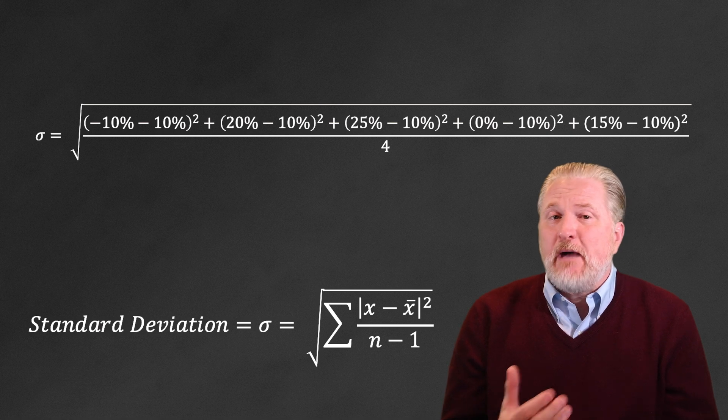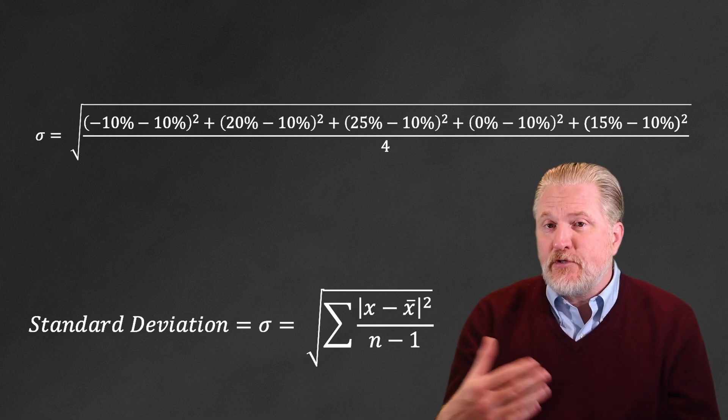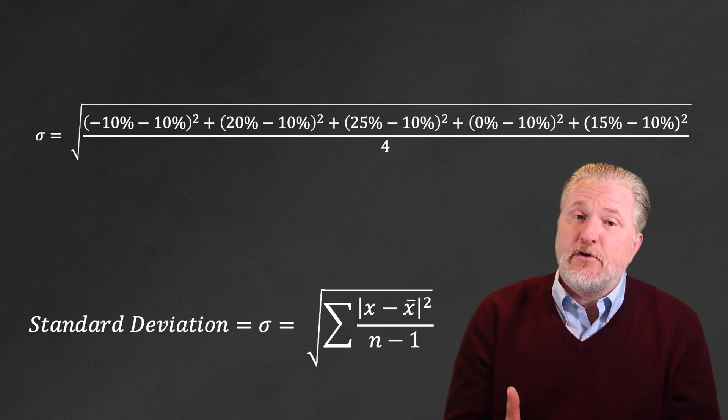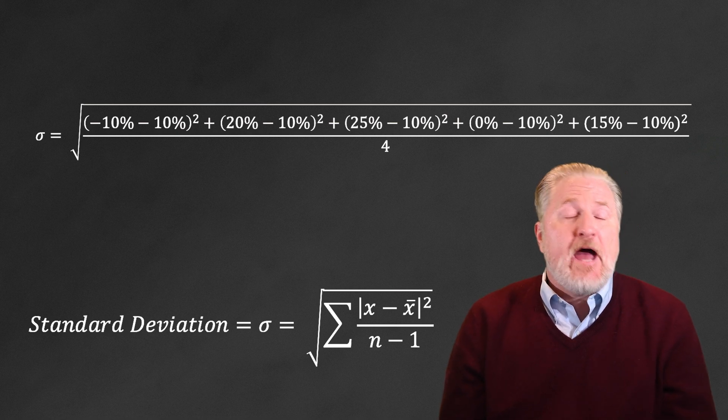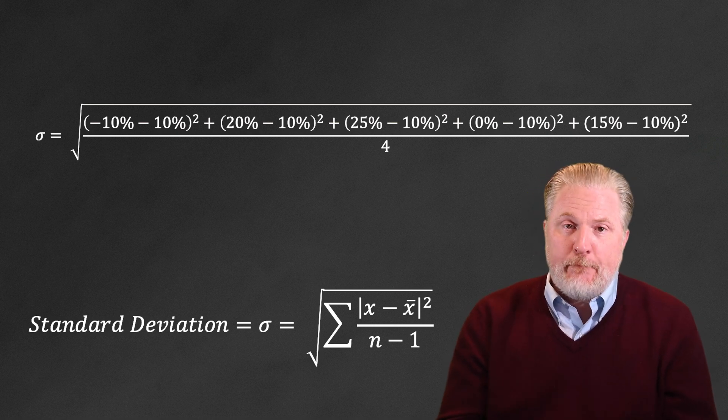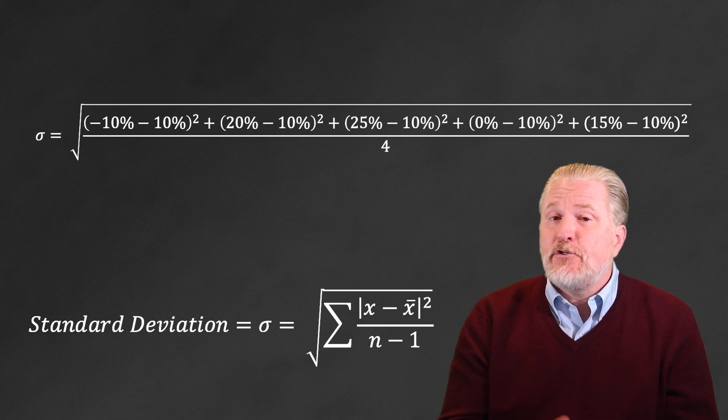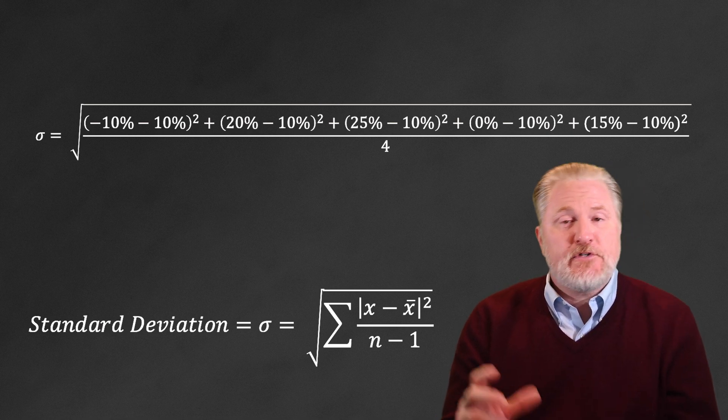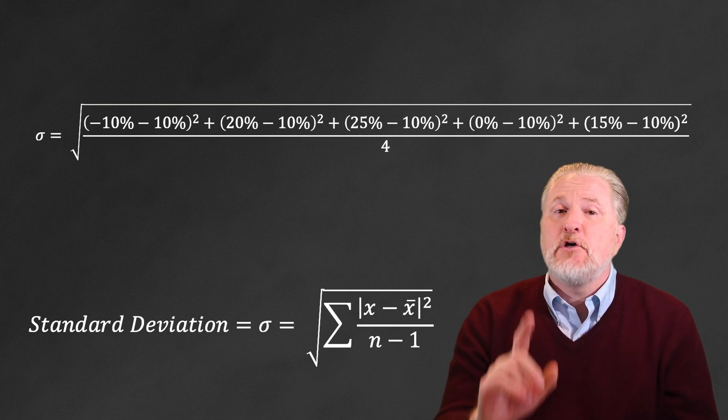Plus 20% minus 10% (so 20%, the return of the second year, minus that 10% average return over the five-year time horizon) squared again. Plus 25%, the return of the third year, minus 10%, the average across all five years, squared again.